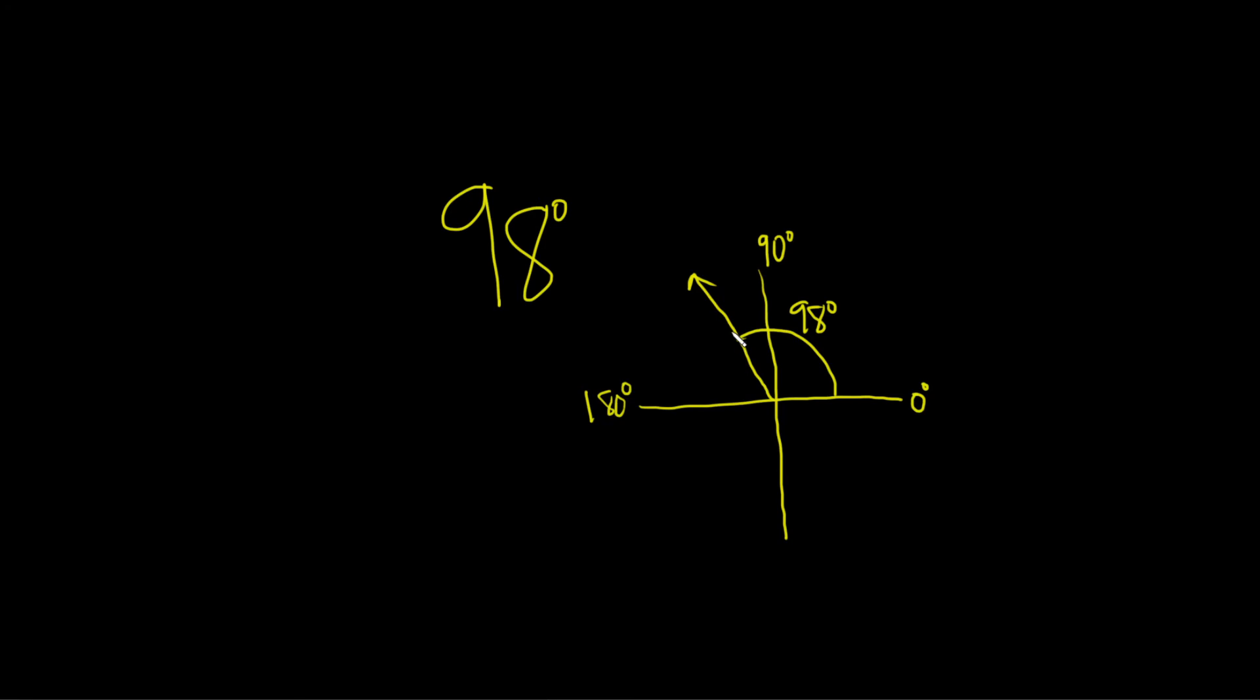To draw it basically you start where you finished here, so you start at the terminal side of 98 and then you just go in a positive direction, so clockwise, and you stop at the x-axis. So you start here and you just draw it all the way to the x-axis. This is the reference angle.